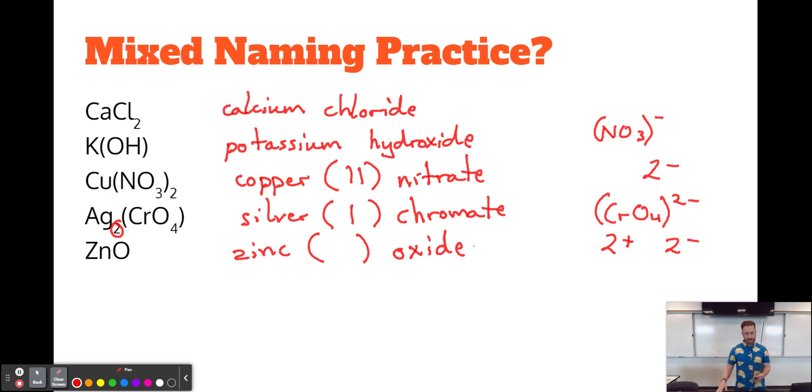Well, oxygen is always a 2 minus ion because it's in the column where it has 6 valence electrons and wants to gain 2, so it's always going to be a 2 minus ion, which means that this one zinc must be a 2 plus ion. So this is zinc II.